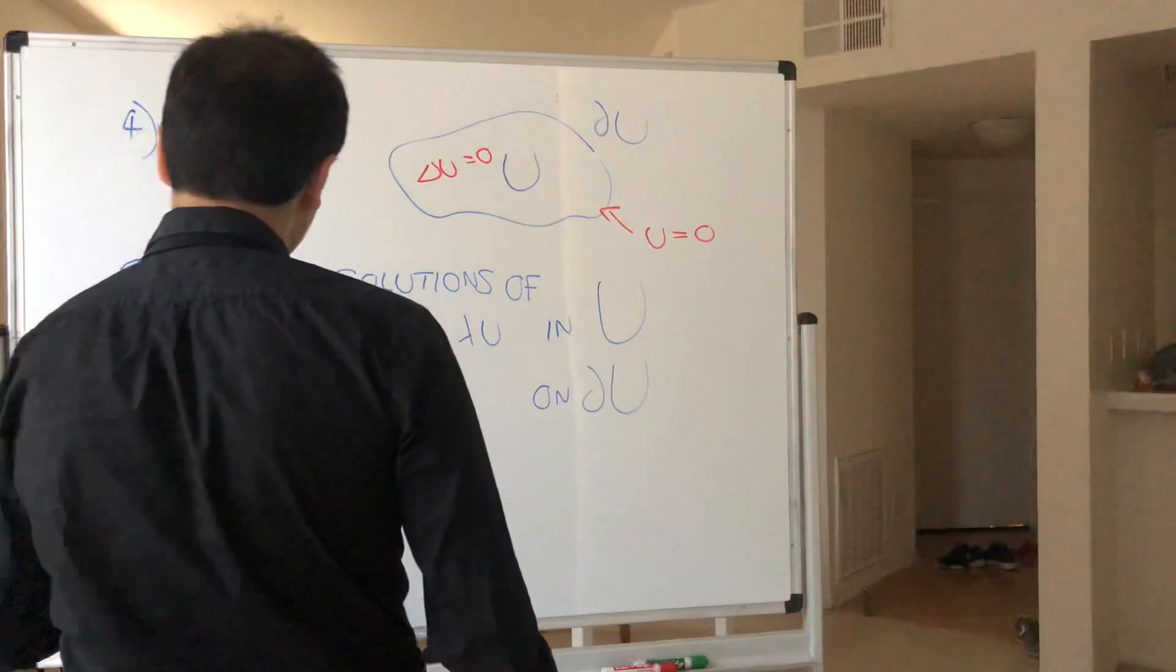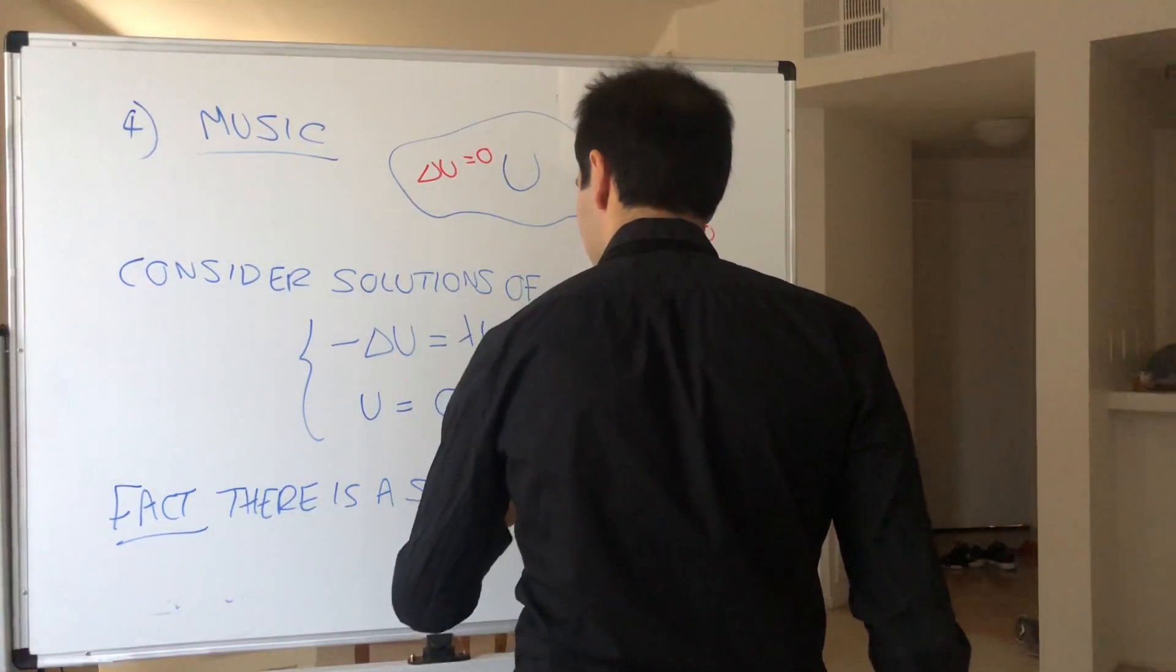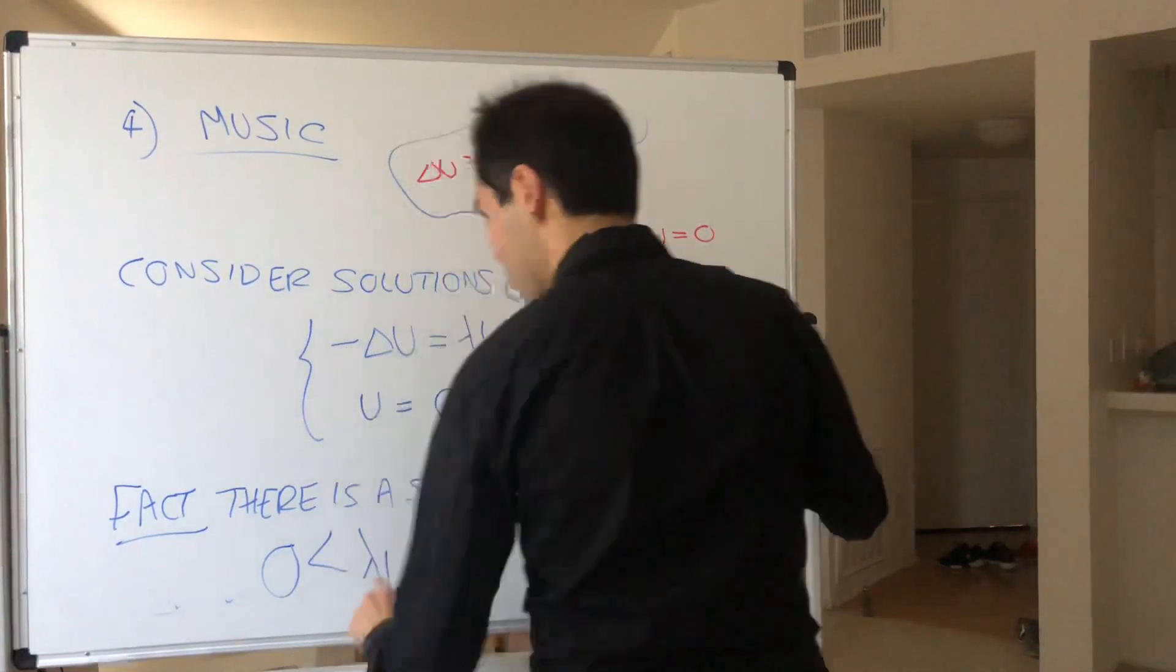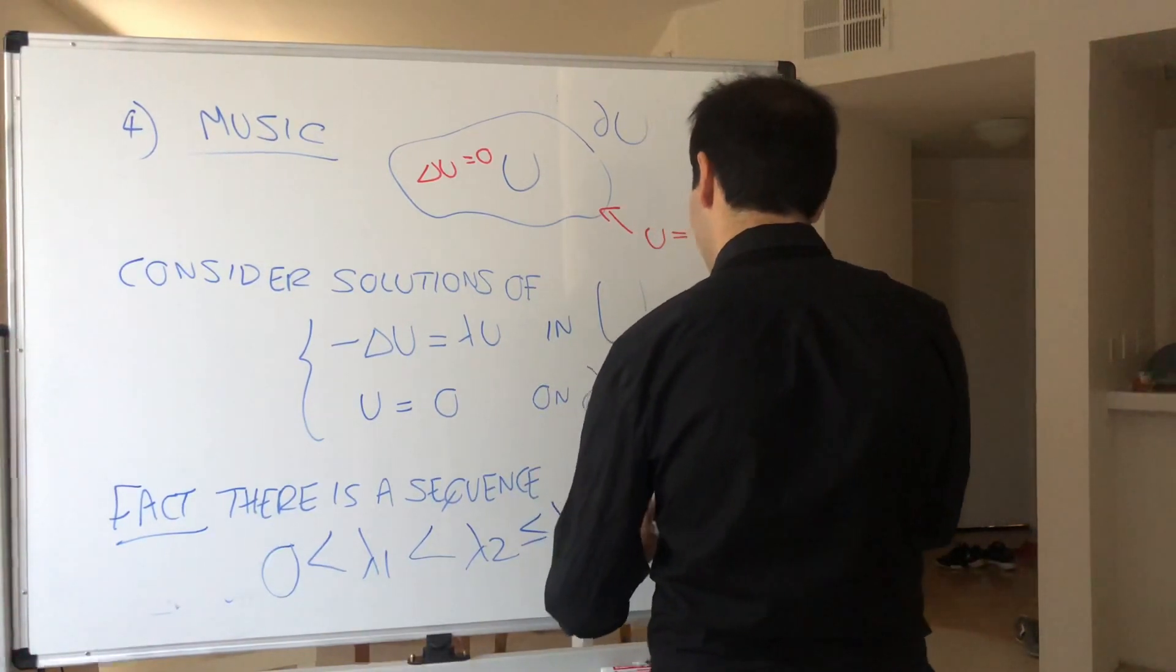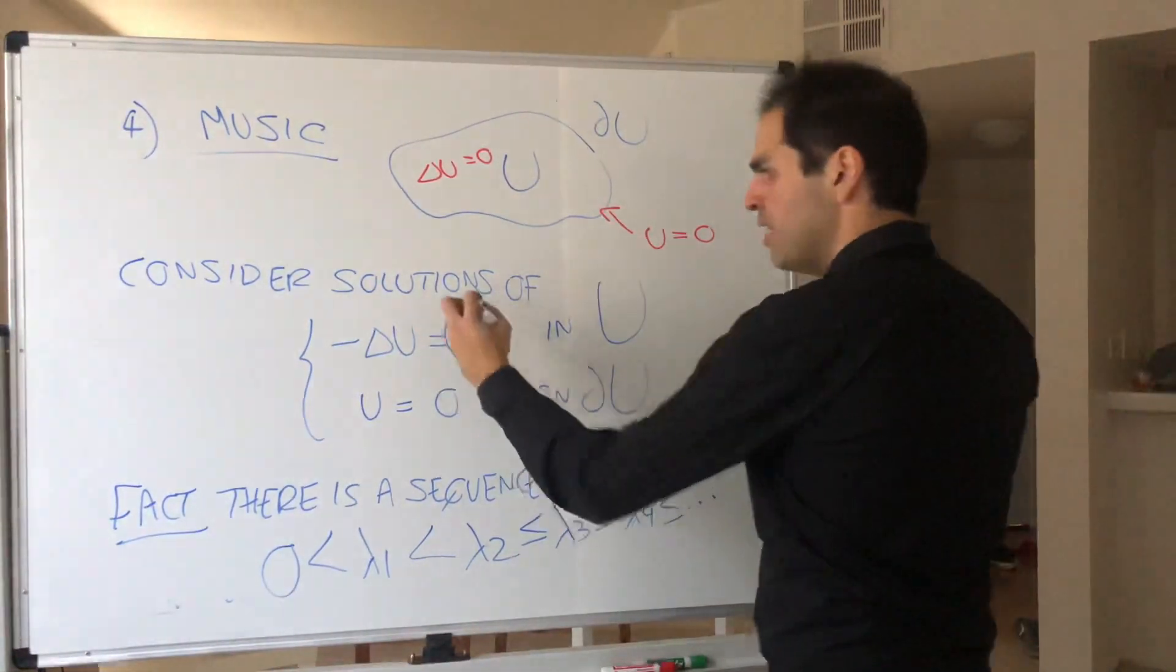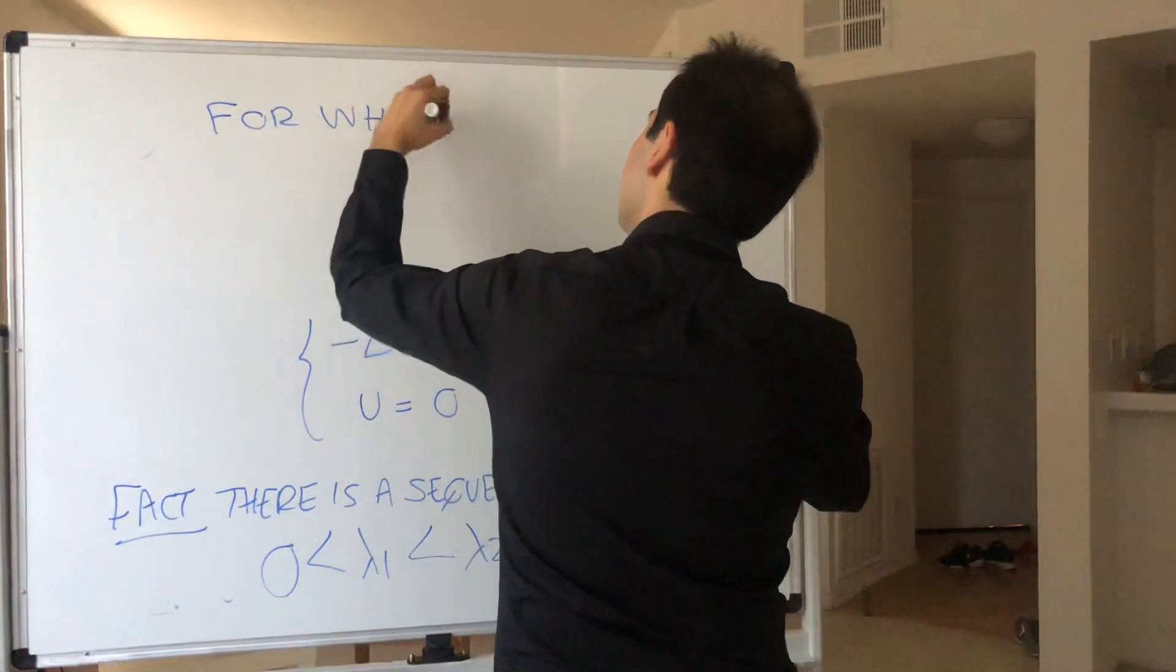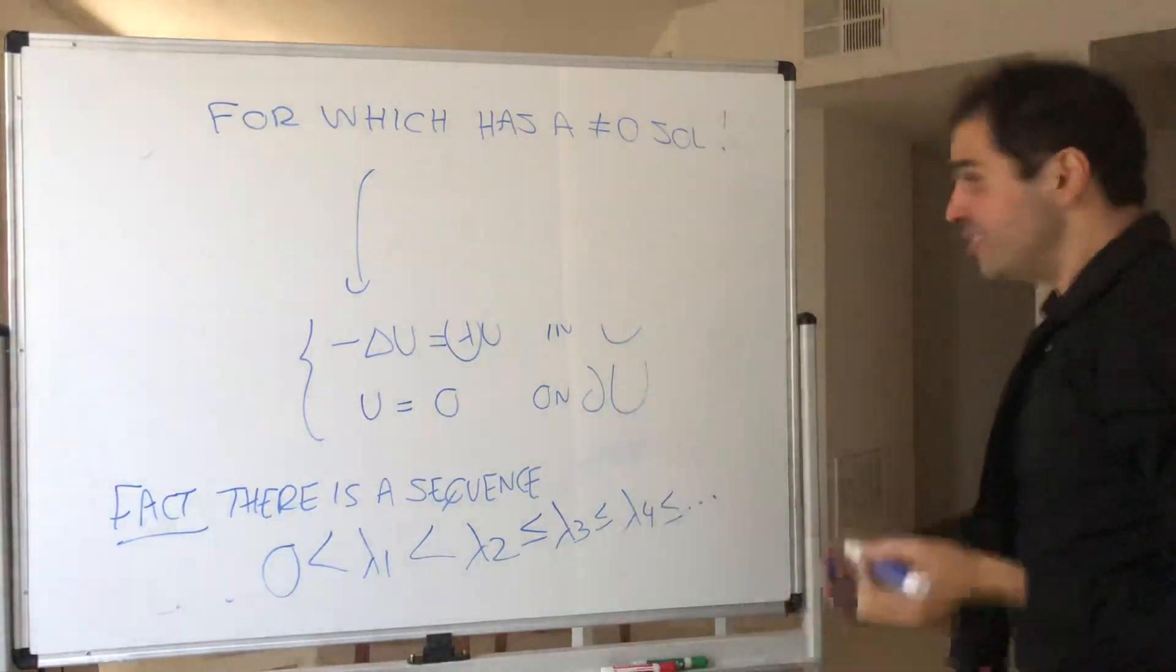So fact, there is a sequence, namely, starting with a positive number. Zero strictly less than lambda one. So the first eigenvalue is positive and strictly smaller than the second eigenvalue. And then lambda three, lambda four, et cetera. For which the above PDE with lambda has a non-zero solution.